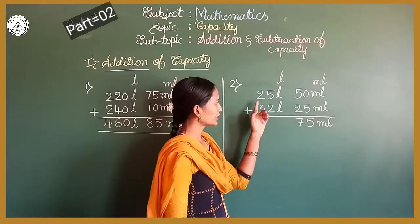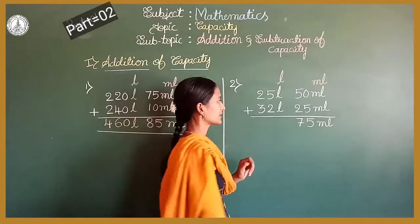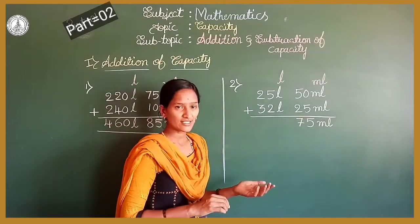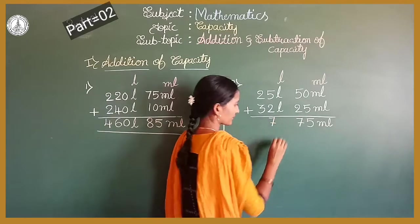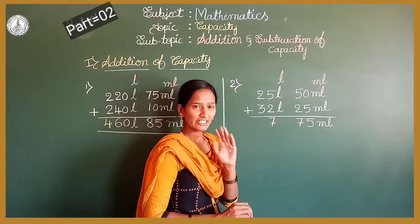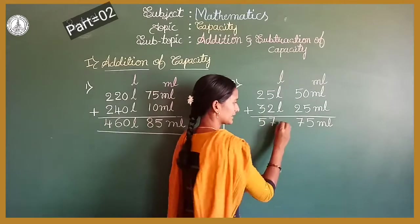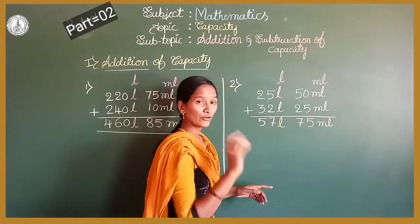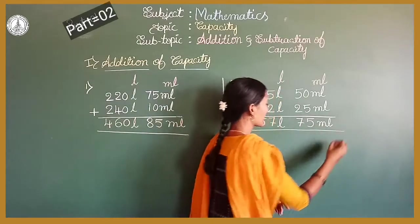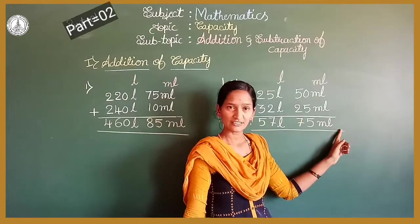Now come to the litre part. 25 litres plus 32 litres. 5 plus 2 is 7. Write down 7. Next, 2 plus 3 is 5. It is 57 litres. Don't forget to write the unit of litre and millilitre. The sum is 57 litres 75 millilitres.